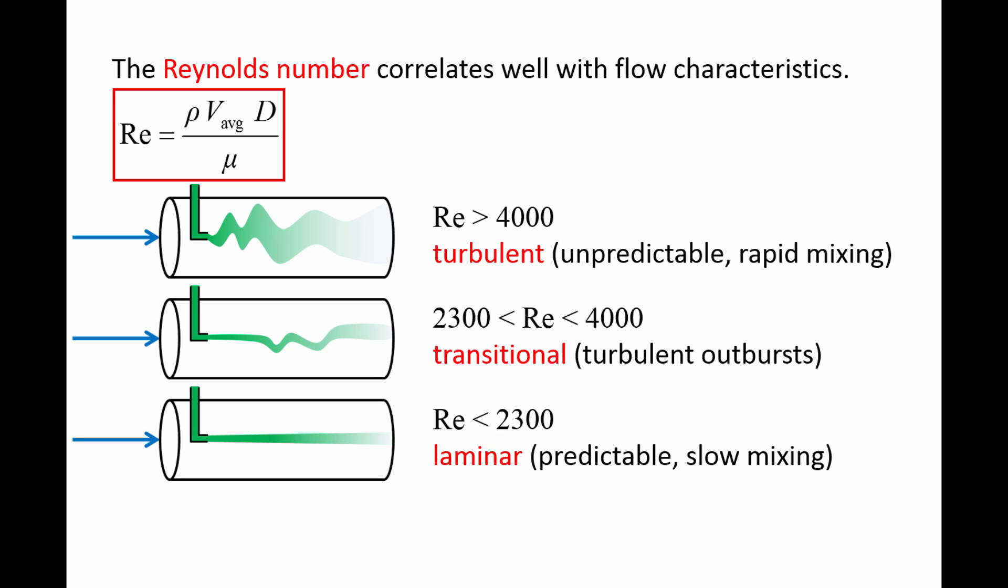Notice that, thus far, we have not specified the flow speed, pipe diameter, or type of fluid in the pipe. The Reynolds number cutoff values for laminar, transitional, and turbulent flows are valid for any combination of flow speed, pipe diameter, density, and viscosity.